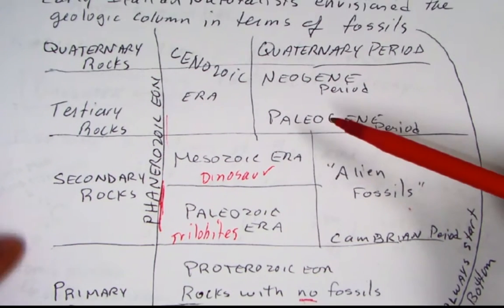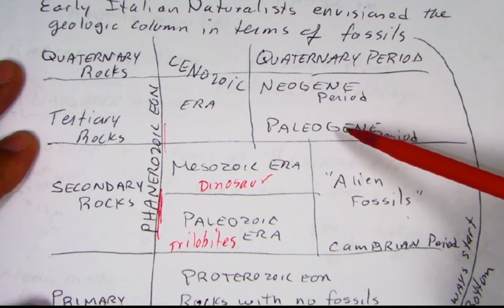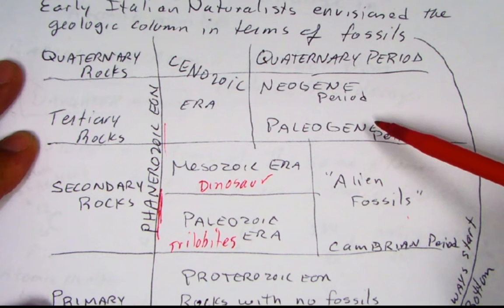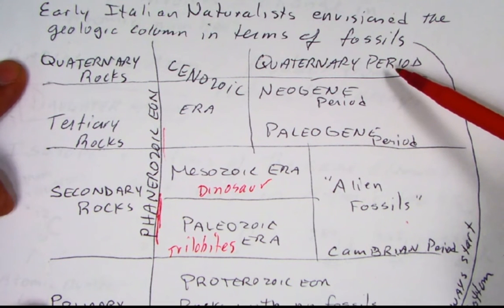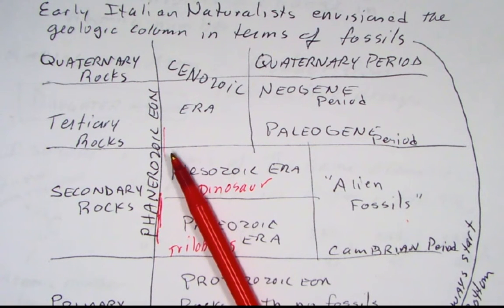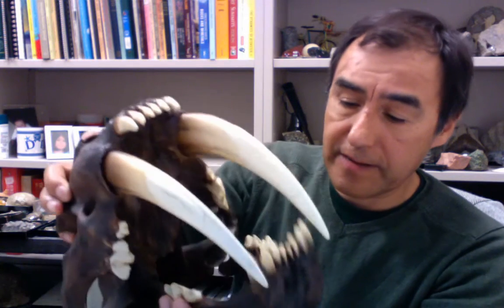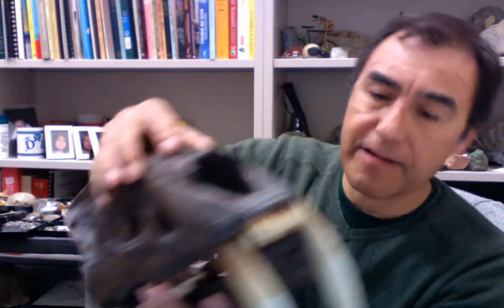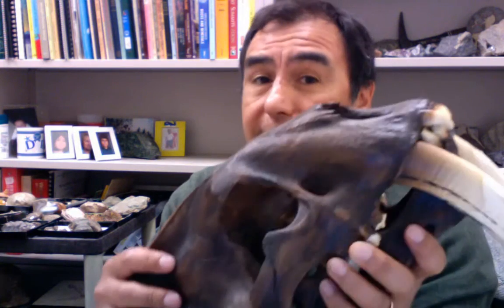Moving along, the tertiary rocks and quaternary rocks — these are mammals. The mammals in the tertiary rocks are a little more archaic; they kind of look like mammals but they're a little different. The quaternary rocks have the modern-looking mammals, and even some ice age mammals like the California State Fossil, which is the saber-toothed cat — Smilodon. It really is a cat; tigers are in Asia, cats are in North America.